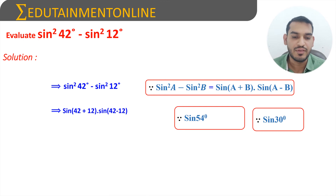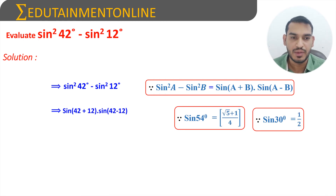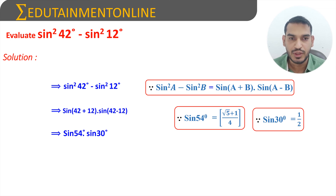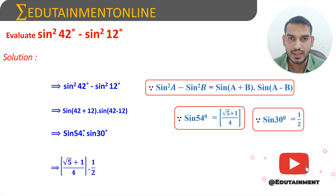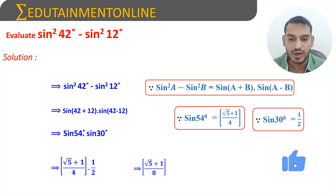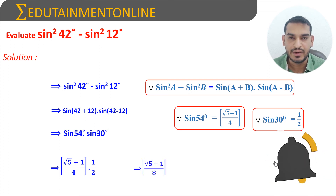We know that sin 54 degrees is equal to (root 5 plus 1) by 4, and sin 30 degrees is equal to 1 by 2. So in place of sin 54 degrees we write (root 5 plus 1) by 4, and sin 30 is 1 by 2. Multiplying the numerators and denominators gives (root 5 plus 1) by 8.